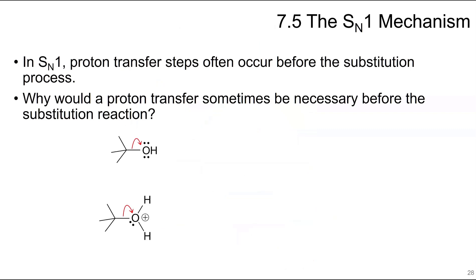In an SN1 reaction, sometimes you need to have a proton transfer step to occur before the substitution even happens. And so why would that be necessary? Here you can see this is an OH. The OH is trying to leave, but this does not happen. OH minus is a terrible leaving group. Water is trying to leave, so water will succeed at leaving. So if you can protonate the alcohol via a proton transfer, that makes it an excellent leaving group.